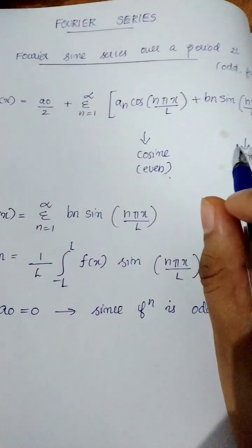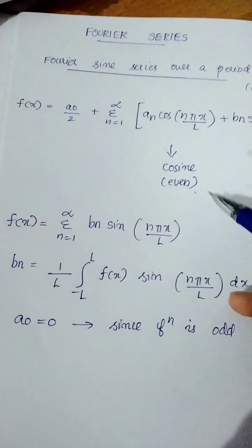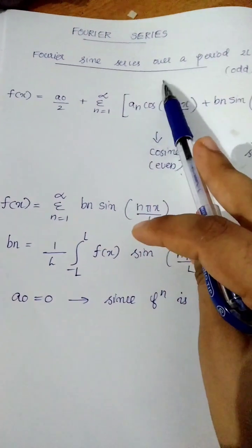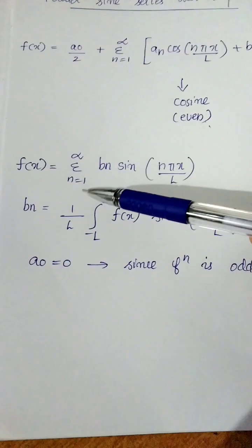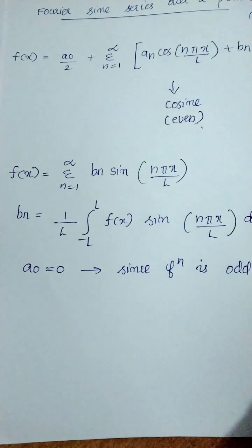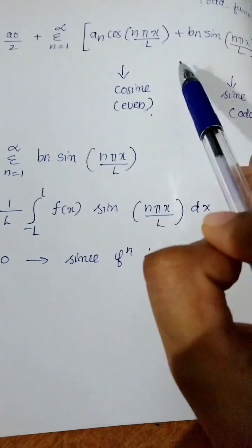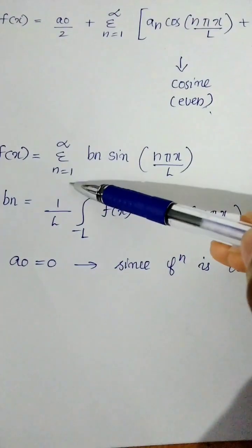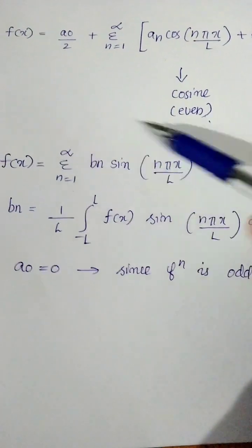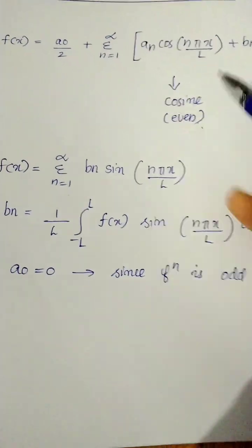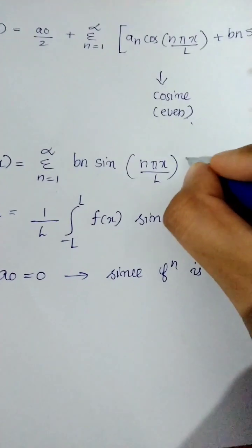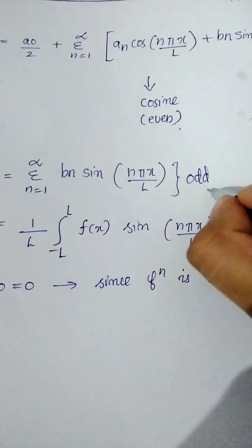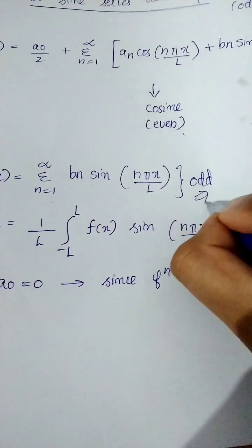Now the equation will be different. We have to do a sine problem. F of x is equal to sigma n equal to 1 to infinity of bn·sin(nπx/L). This is the first equation of the sine series.